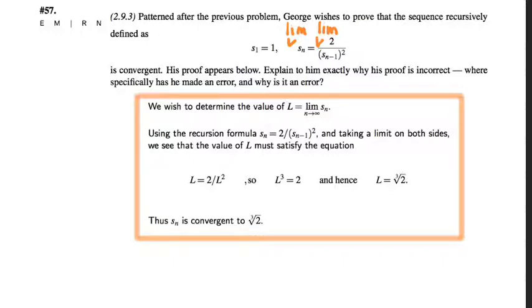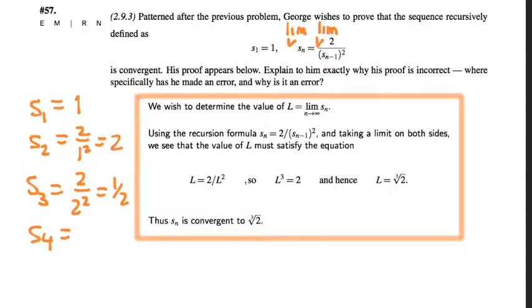So this is a little bit outside the scope of the problem, but how could we know whether or not this sequence is convergent? Let's look at the first few terms. If s_1 is 1, then s_2 is 2 over 1 squared, so that's 2. S_3 is 2 over 2 squared, that's 1 half. S_4 is 2 over 1 half squared. Let's see, 1 half squared is 1 fourth. 2 over 1 fourth is 8. S_5 is going to be 2 over 8 squared, that's 1 over 32. S_6 is going to be 2 over 1 32nd squared, that's 2 over 1,024, so 2,048.